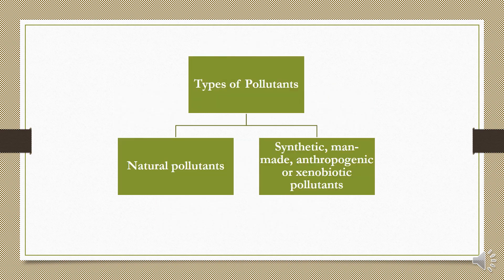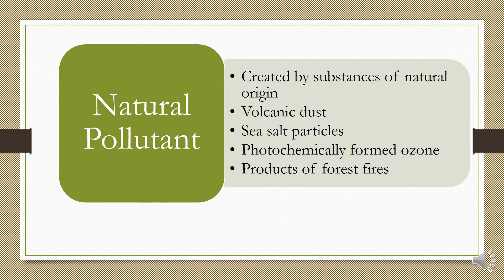Types of pollutants: on the basis of their generation, if they come from nature they are called natural pollutants. If they are from human activity, they can be called synthetic, man-made, anthropogenic, or xenobiotic pollutants — all these names can be used for man-made pollutants.